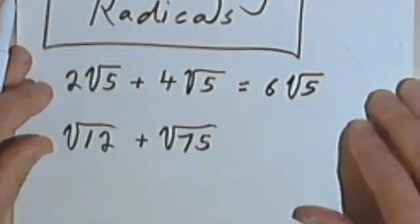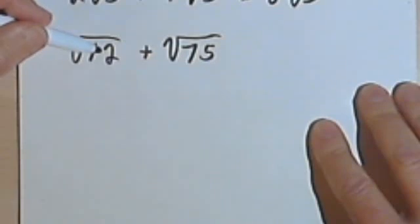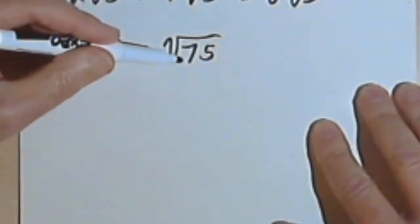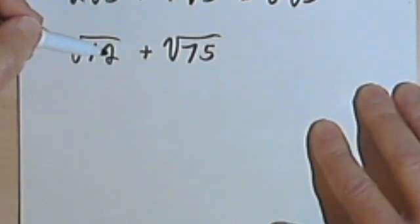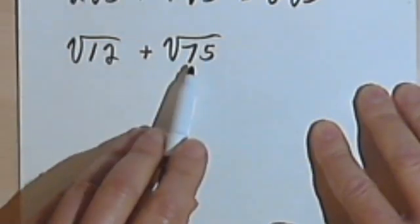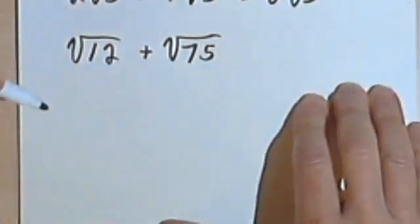Now the next one's a little bit harder and it's going to take some work. So I have the square root of 12 plus the square root of 75. The radicands aren't the same, so it looks like I can't do anything, but if we simplify each of these radicals, then we may find that we can get something out of it.